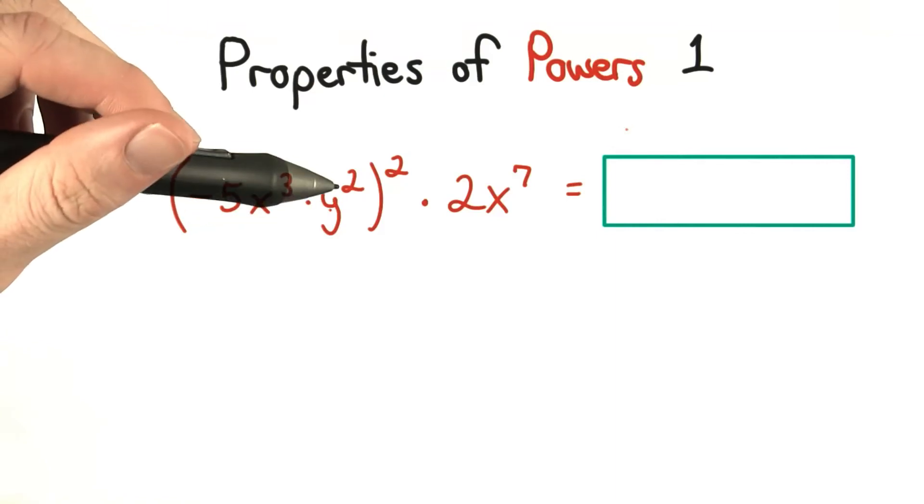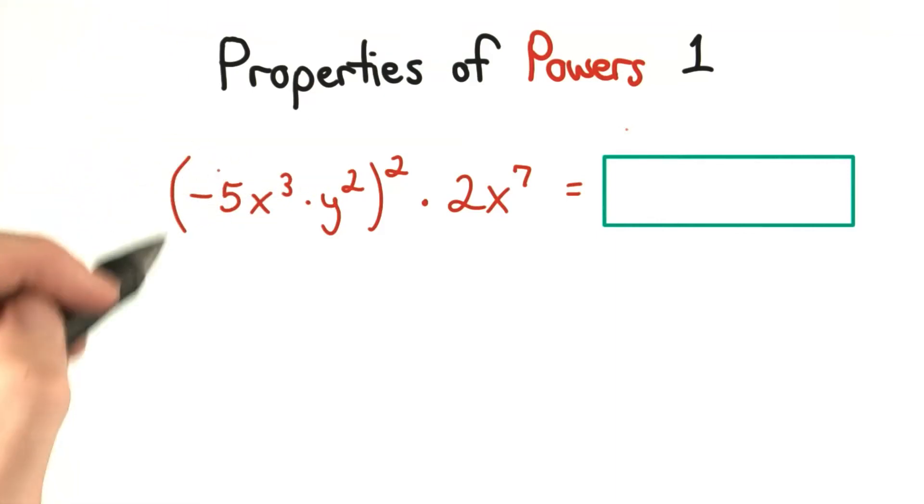We have negative 5 x cubed times y squared, squared. So I should write this twice.